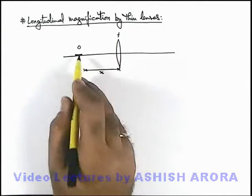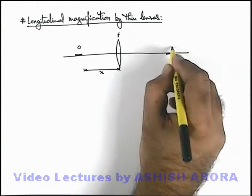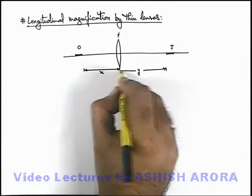If we talk about its image, its image is produced on the other side, and this image is located at distance y from the lens.